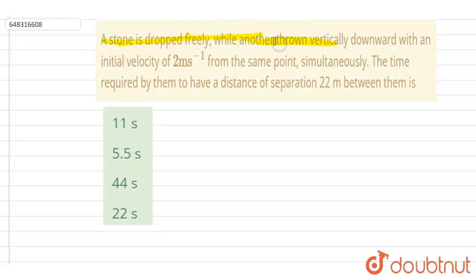freely while another is thrown vertically downward with an initial velocity of 2 meters per second from the same point simultaneously. The time required by them to have a distance of separation of 22 meters between them is - so if you see here, let's